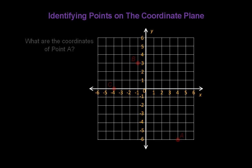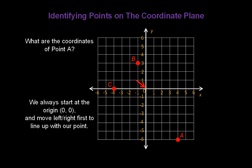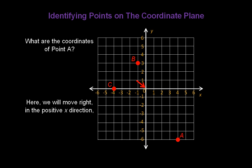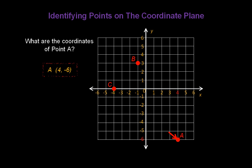Now let's identify points on the coordinate plane. What are the coordinates of point A on our grid? We always start at the origin, (0, 0), and move left or right first until we line up with our point. Here, we're going to move to the right in the positive x direction, 4 places, so the x-coordinate is 4. Now we move down in the negative y direction, 6 places, so the y-coordinate is -6. That's the coordinates for point A: (4, -6).